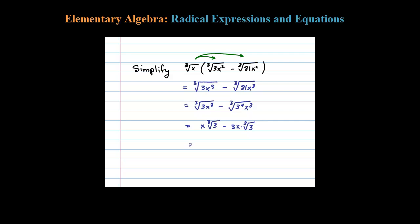Notice what we're left with here are like terms. So I have X cube root of 3 minus 3X cube root of 3. Think of that as like terms—we're going to think of this as a 1, so 1 minus 3 is negative 2X cube root of 3.